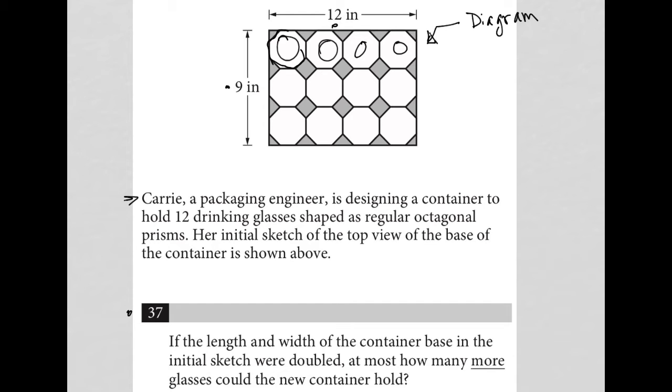Question 37 says, if the length and width of the container base in the initial sketch were doubled, so we go from 9 to 18, and we go from 12 to 24, how many more glasses could the new container hold?